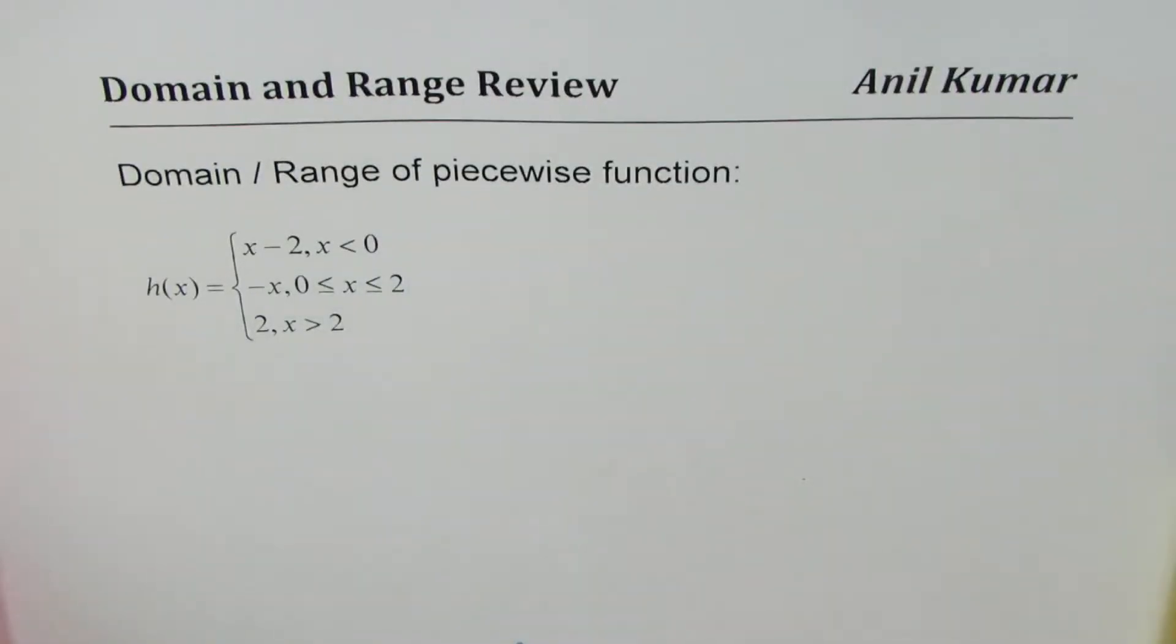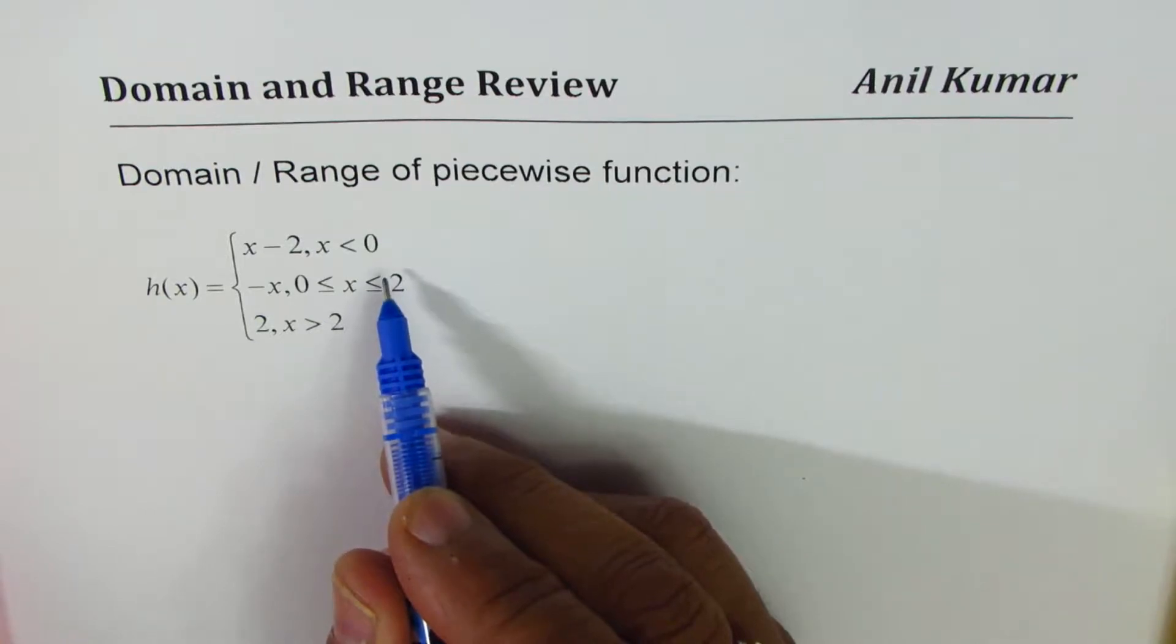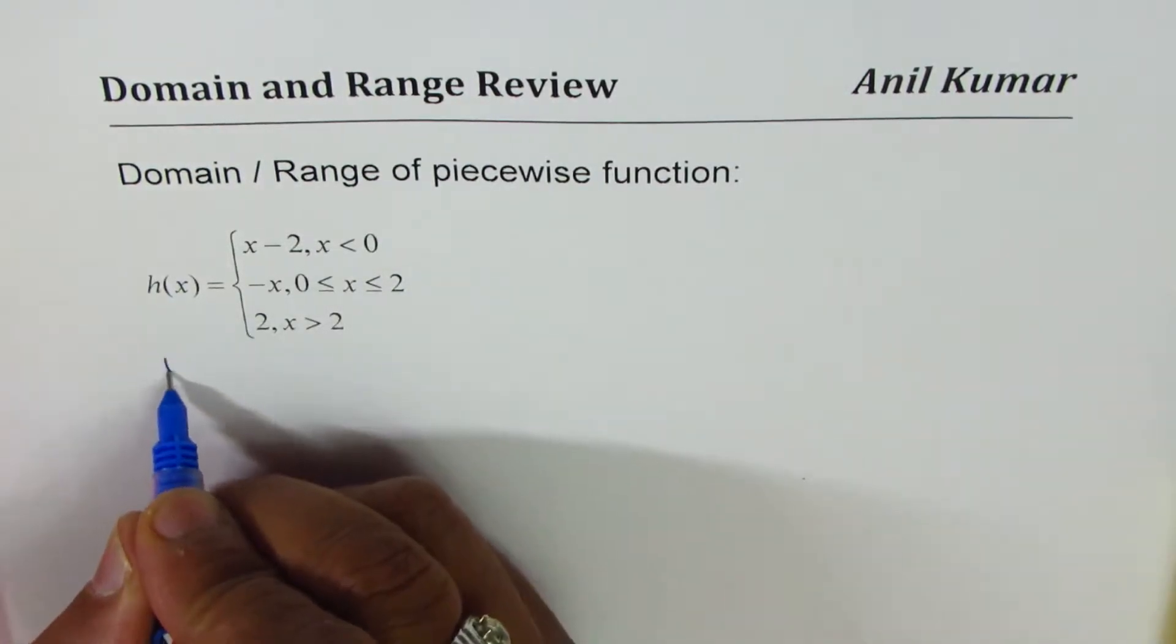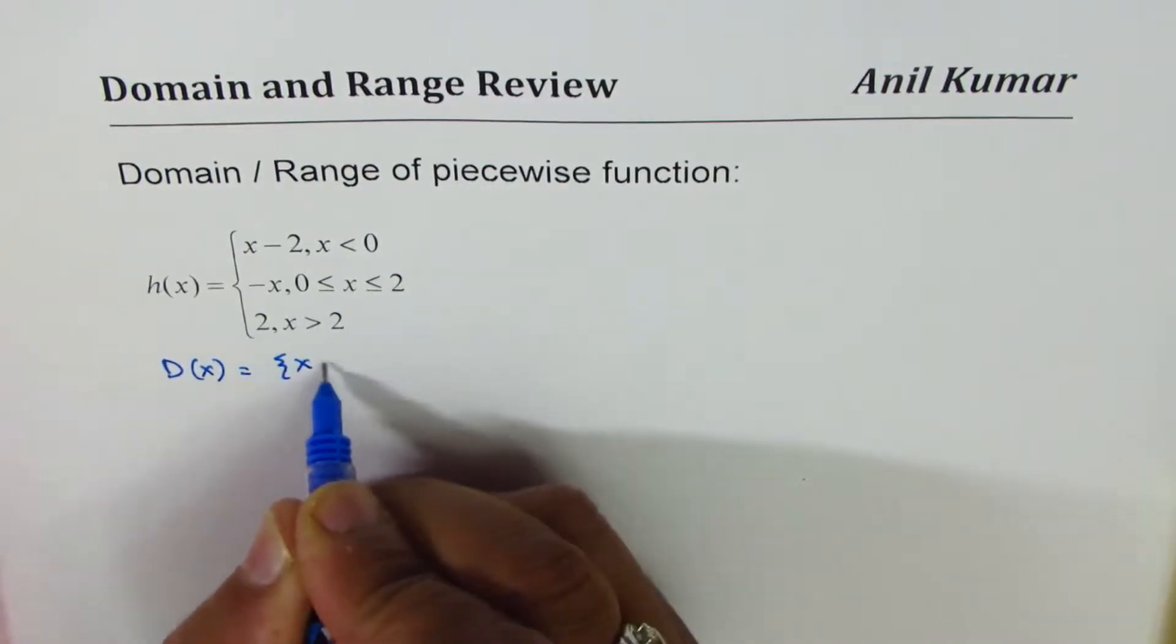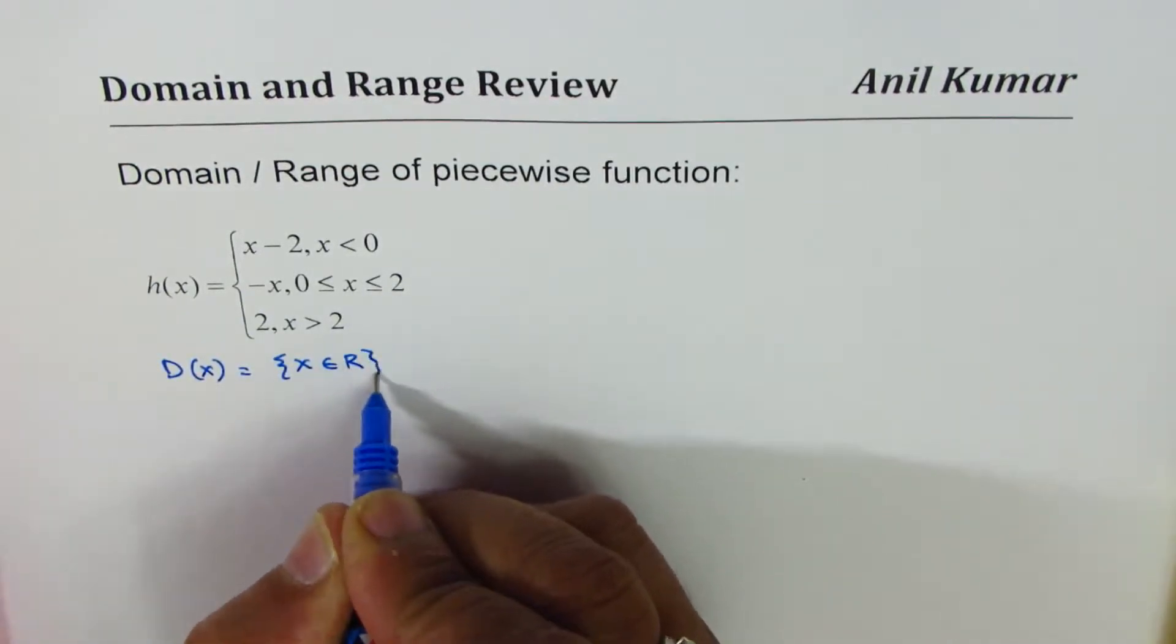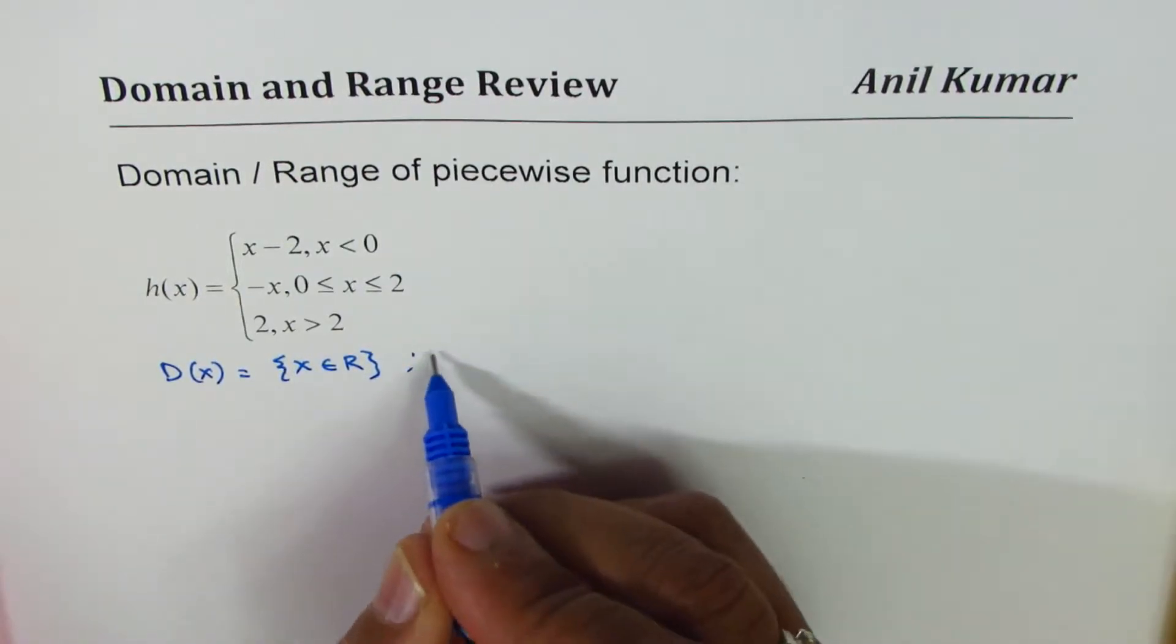So that means domain for the function is all real numbers. We could straight away write domain of the function is x belongs to real numbers. Some of you may prefer to write an interval notation which could be like from minus infinity to plus infinity.